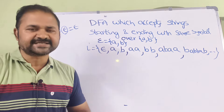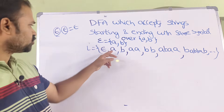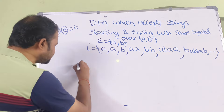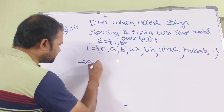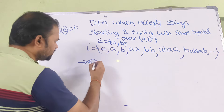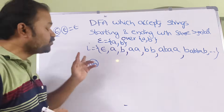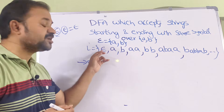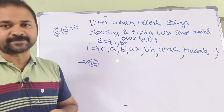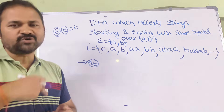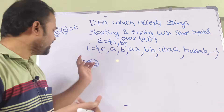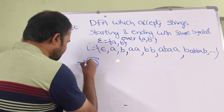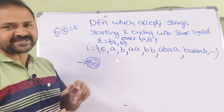Now let us draw the DFA. The initial state is Q0. We have to make Q0 also a final state, because epsilon is a valid string — without applying any input symbol we should already be in a final state. So Q0 is both the initial and final state, because it accepts epsilon.